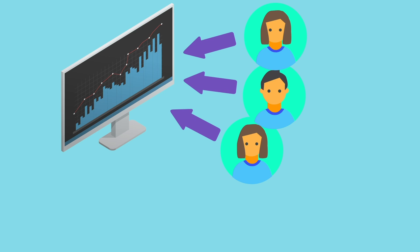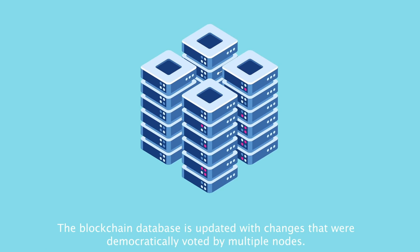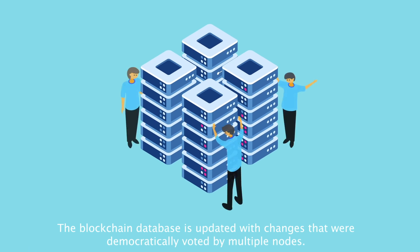The data is recorded in blocks. Each new piece of information adds a new block to the chain in a chronological way, where all further information is registered and never erased. The blockchain database is shared by all who are involved in the transaction, monitored by everybody, and no one is the owner or controls it alone.